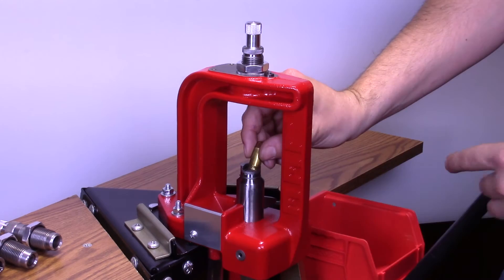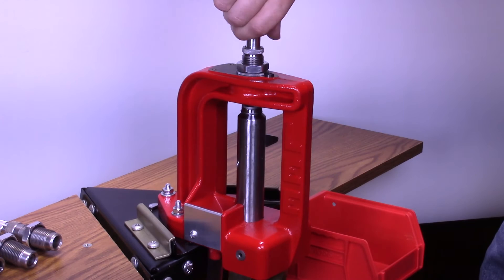With a loaded round in the die, turn the adjusting screw in until you can feel it just touch the case mouth.